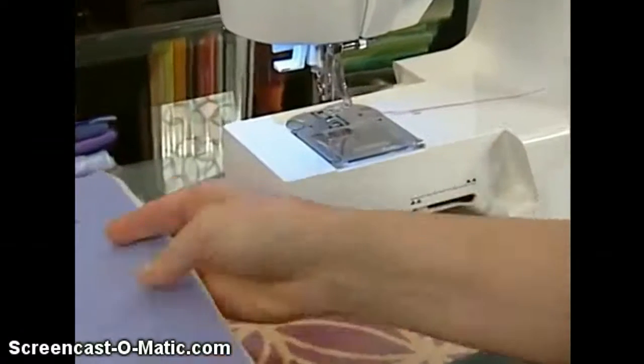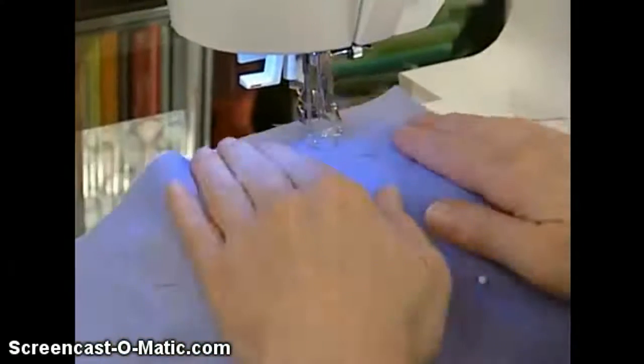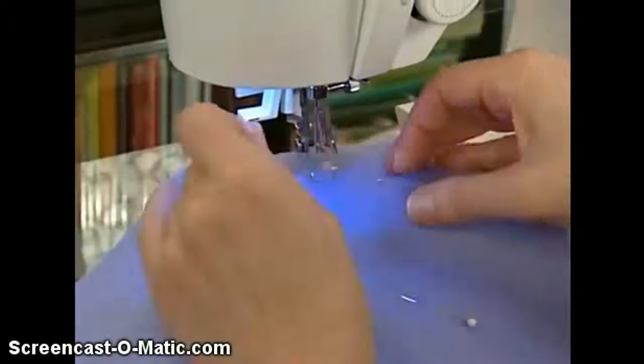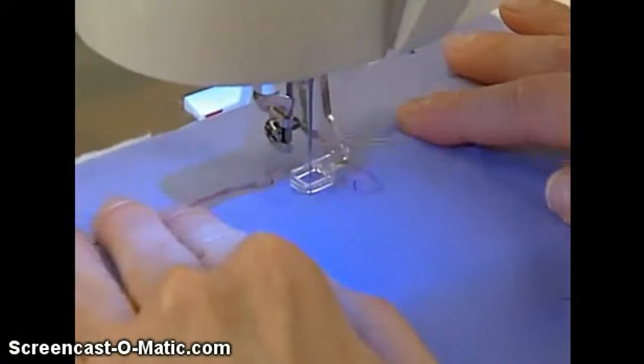Disengage the feed dogs. Set the machine for straight stitch. Thread the machine, then turn the hand wheel to draw up the bobbin thread. Lower the presser foot.